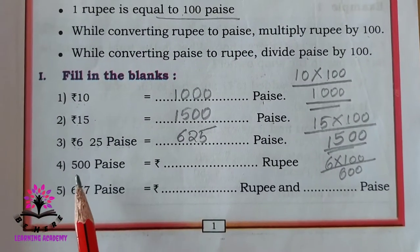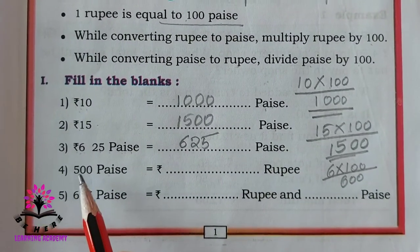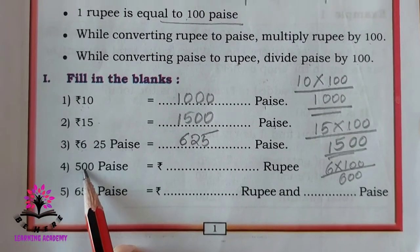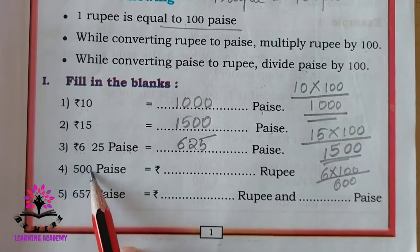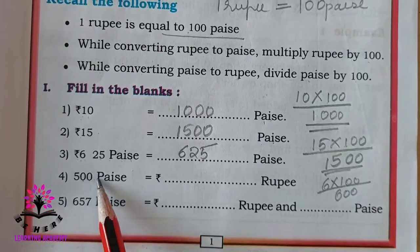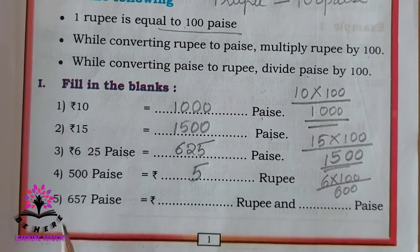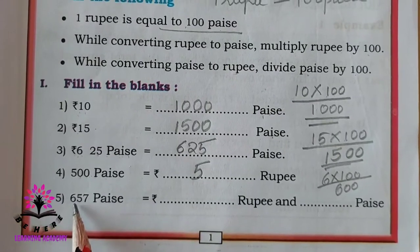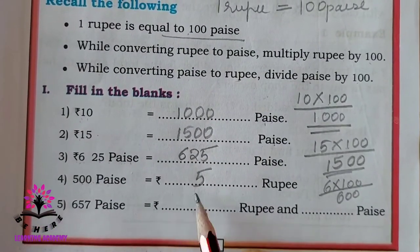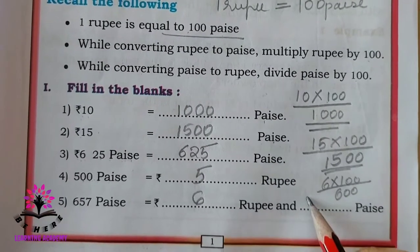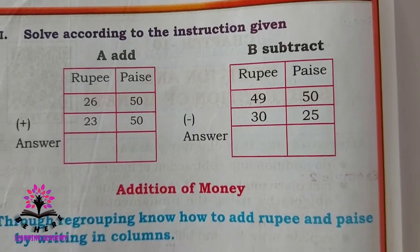Now, 500 paisa is equal to how many rupees? One rupee is 100 paisa, two rupees is 200, three rupees is 300, four rupees is 400, five rupees is 500 paisa. Next example: 657 paisa is equal to 6 rupees and 57 paisa.